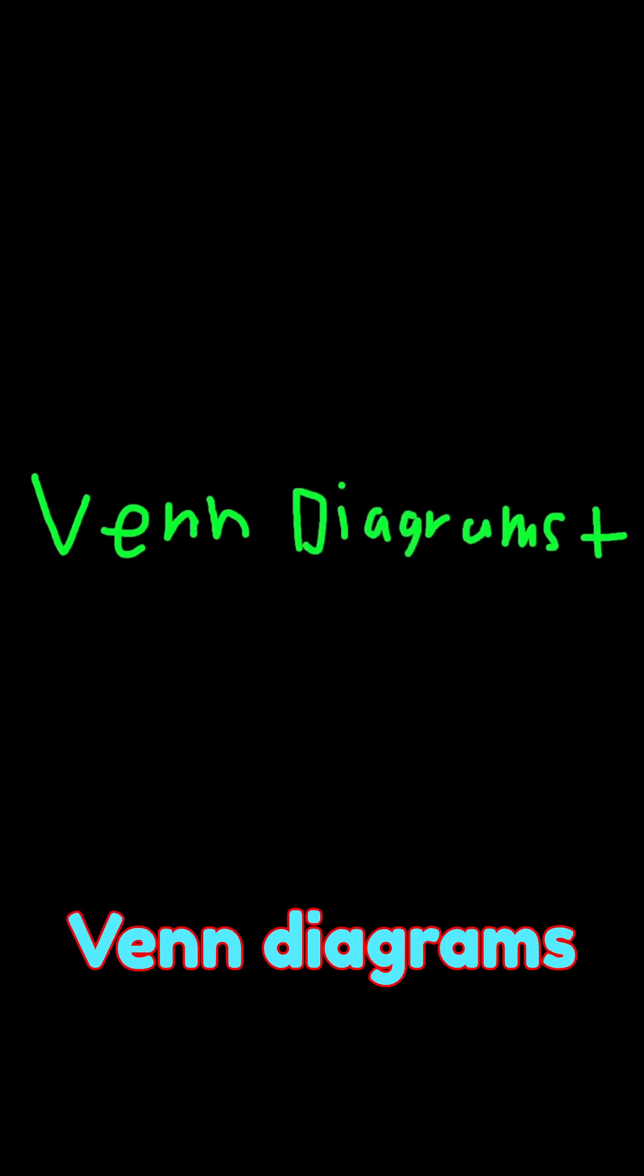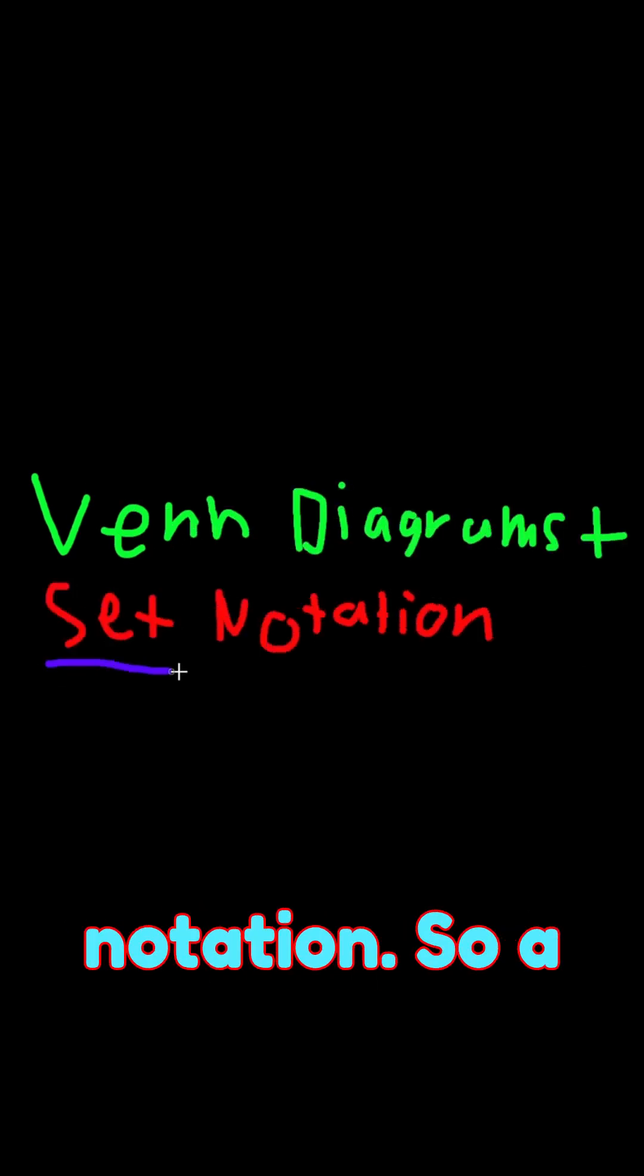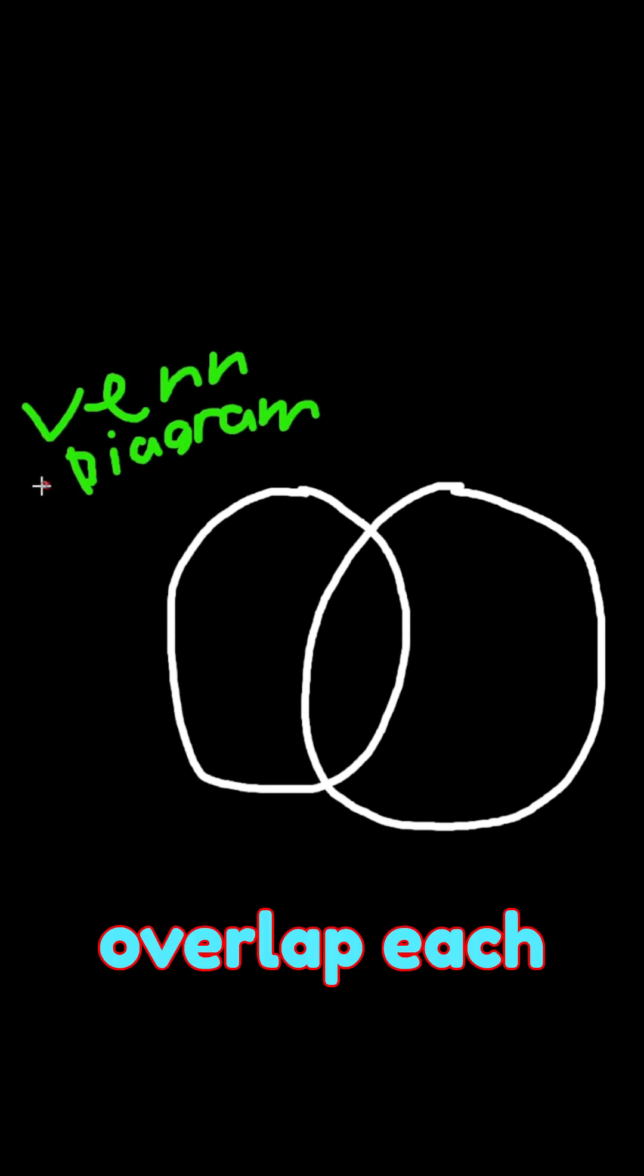I'm going to explain Venn diagrams and some set notation. A Venn diagram has two circles that overlap each other. We'll call them set A and set B.